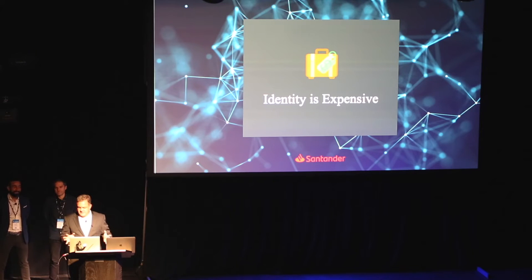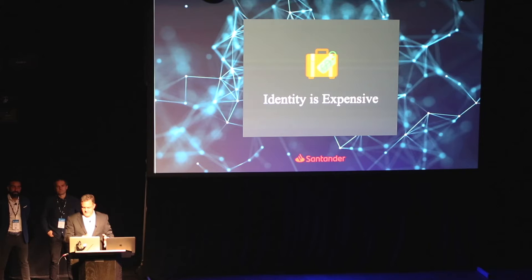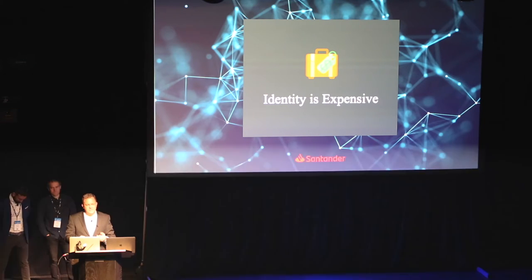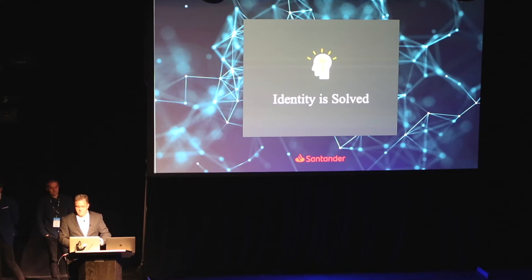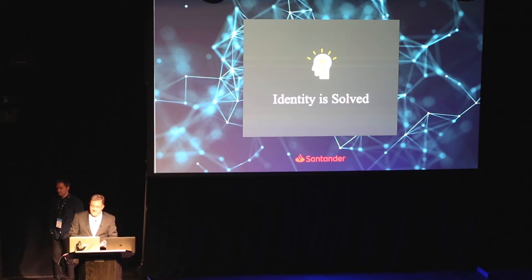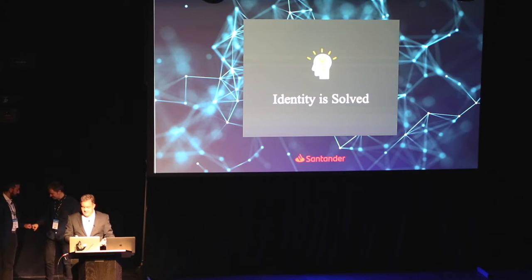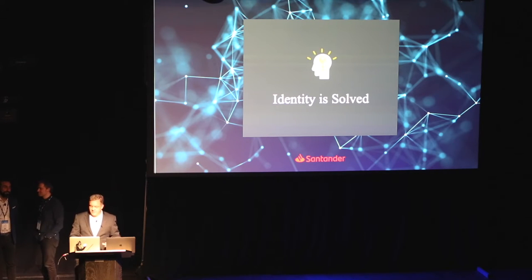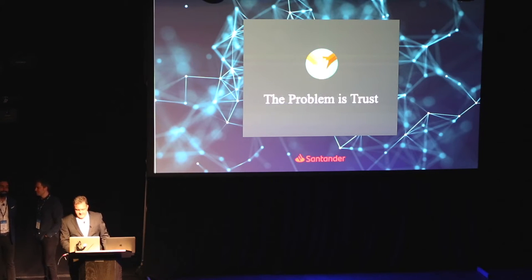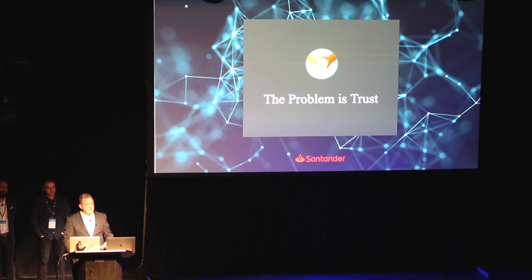These costs and risks in digital commerce are all focused on identifying somebody. But why do we need to identify somebody? What we need to do is to trust them. And basically, identity is solved — we know and can identify people. The problem instead is trust. How do we establish digital trust?